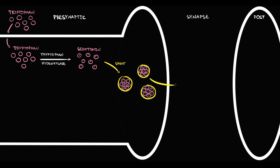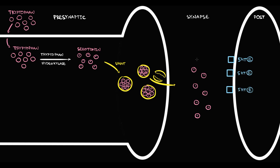Once depolarization occurs, the neuron pushes vesicles into the synapse — we call this process exocytosis. As a result, vesicles become destroyed and serotonin molecules enter the synapse. On the postsynaptic neuron, we have numerous serotonin receptors, and once serotonin appears in the synapse, most of them immediately bind to serotonin receptors. With binding, they activate serotonin receptors, and activation of serotonin receptors improves mood and increases energy.